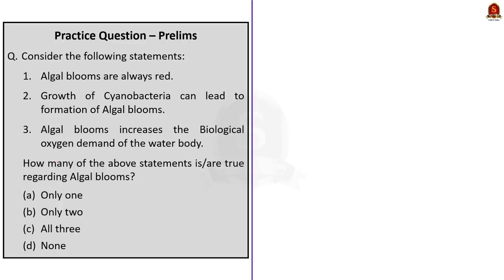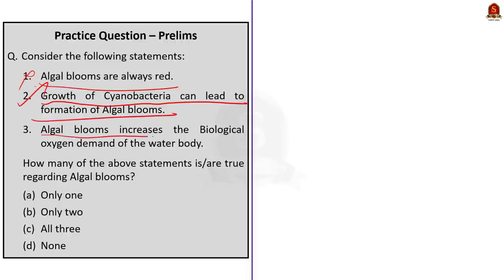The next question has three statements. Statement one says algal blooms are always red — this is incorrect, as algal blooms are not always red. Statement two says growth of cyanobacteria can lead to formation of algal bloom — this is correct. Statement three says algal bloom increases the biological oxygen demand of the water body — this is also correct. So the correct answer is option B — only two statements are correct.